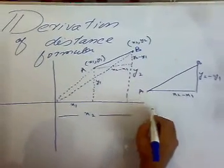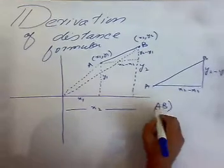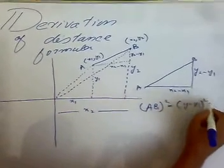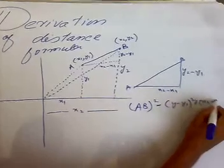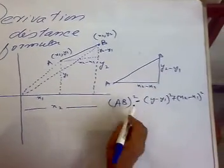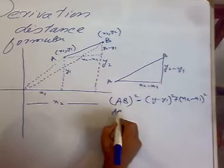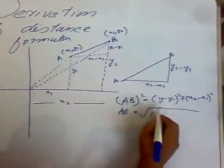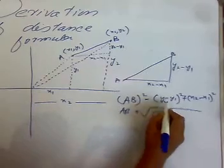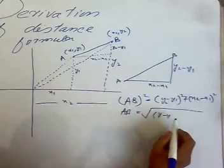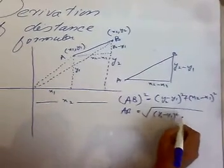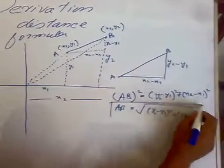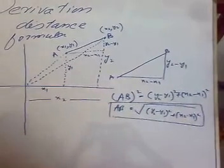Applying the Pythagorean theorem to the right angle triangle: AB squared equals (y2 minus y1) whole squared plus (x2 minus x1) whole squared. Taking the square root on both sides, we get the value of AB, which is the square root of (y2 minus y1) whole squared plus (x2 minus x1) whole squared. This relation is known as the distance formula.